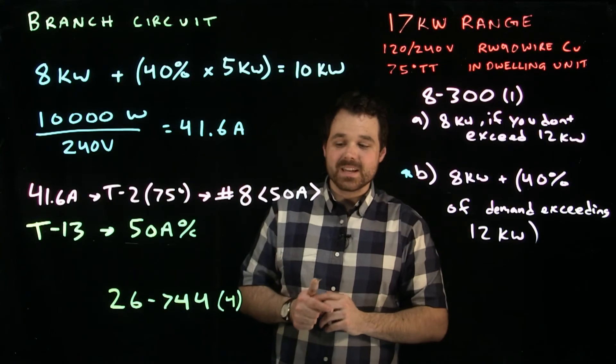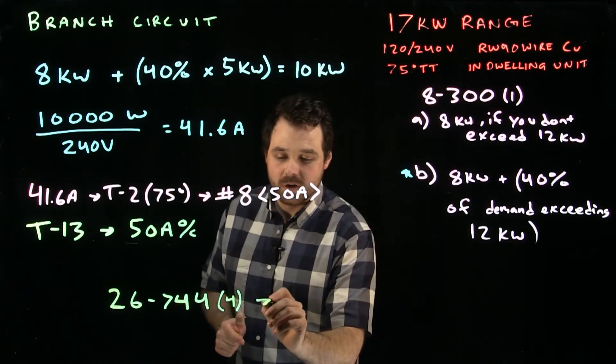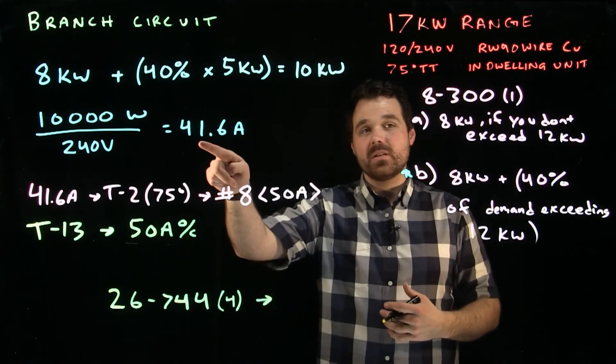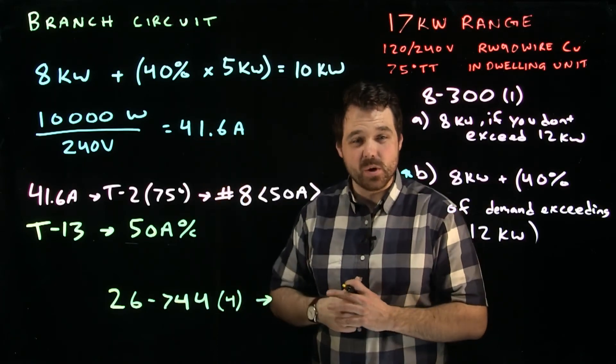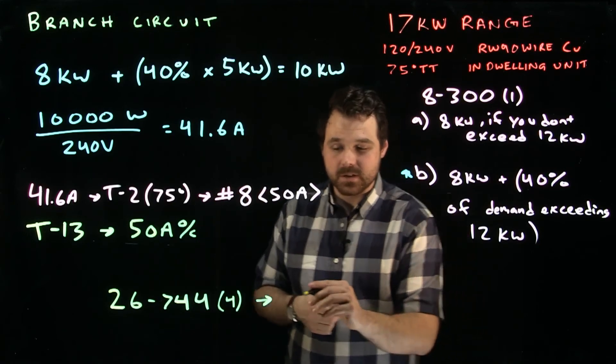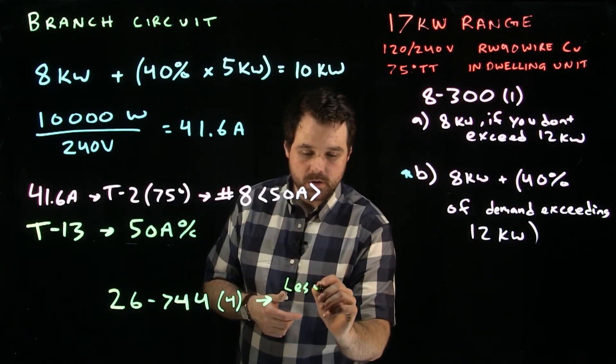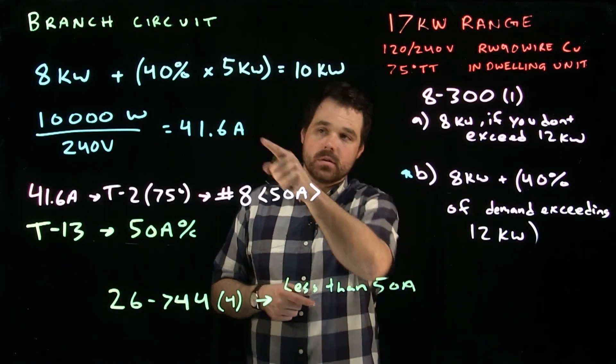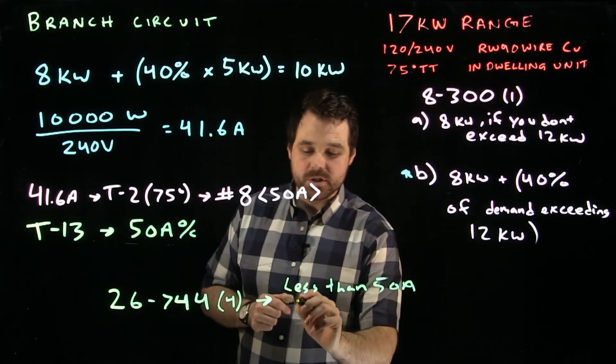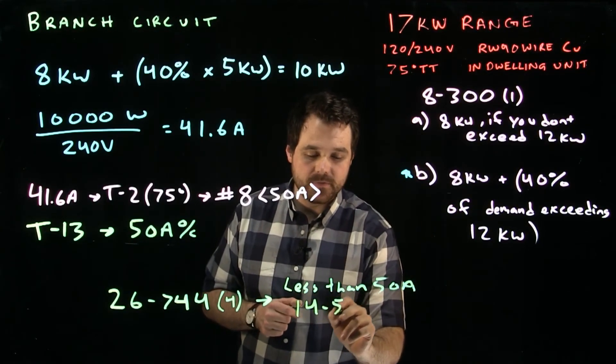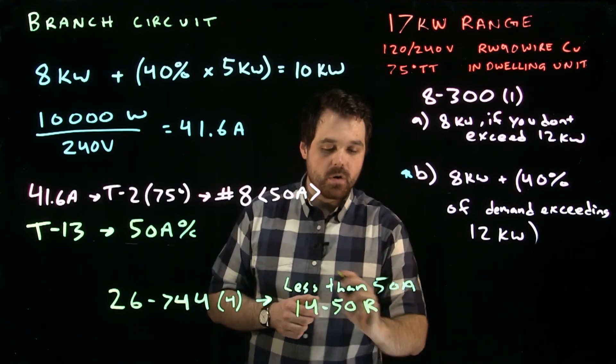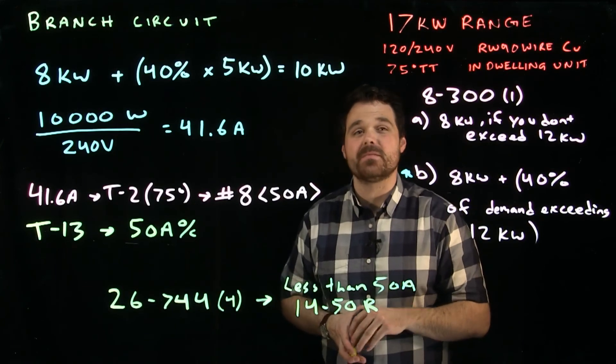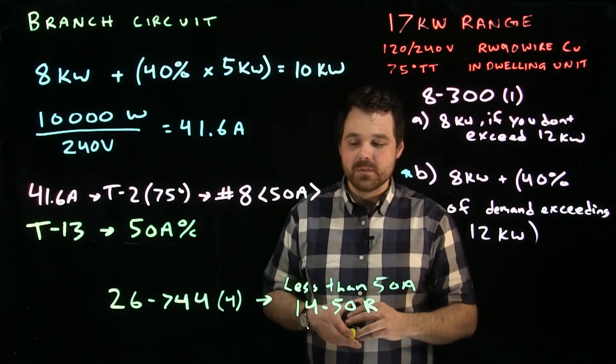Basically, 26-744 sub-rule 4 tells us if your range, your calculated load of your range, 41.6 is our calculated load. If your calculated load is less than 50 amps, that would mean we would have to put it onto a 14-50R. We have to put it onto a specific type of receptacle, just so that every house has the same type of plug or receptacle for their range.